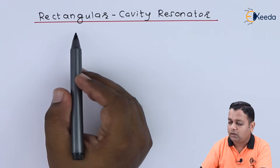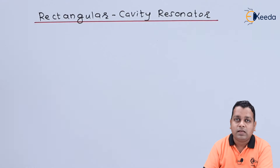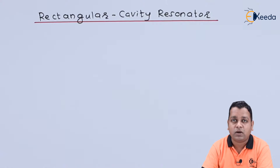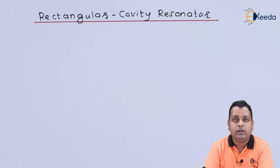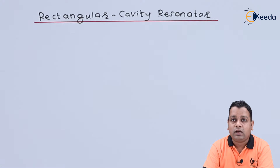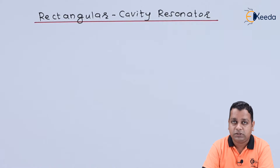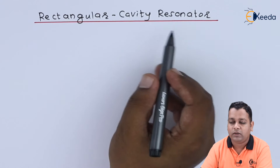We start with our topic: Rectangular Cavity Resonator. The rectangular waveguide is defined as a hollow metallic tube having a rectangular shape of cross section, extending from one end to another. The cavity inside is closed at the top wall, bottom wall, and the two side walls, whereas the tube is open at both ends. When both open ends of the rectangular waveguide are closed with short-circuiting plates, we obtain the Rectangular Cavity Resonator.